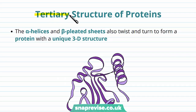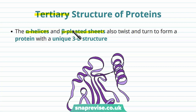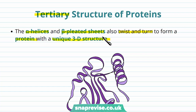Next, of course, we come to the tertiary structure, so this is the third level of organization. We've got alpha helices and beta pleated sheets, and these structures don't just exist on their own. They're not just in a line, one after the other. They twist and turn, and they integrate with each other to form a protein with a unique 3D structure.